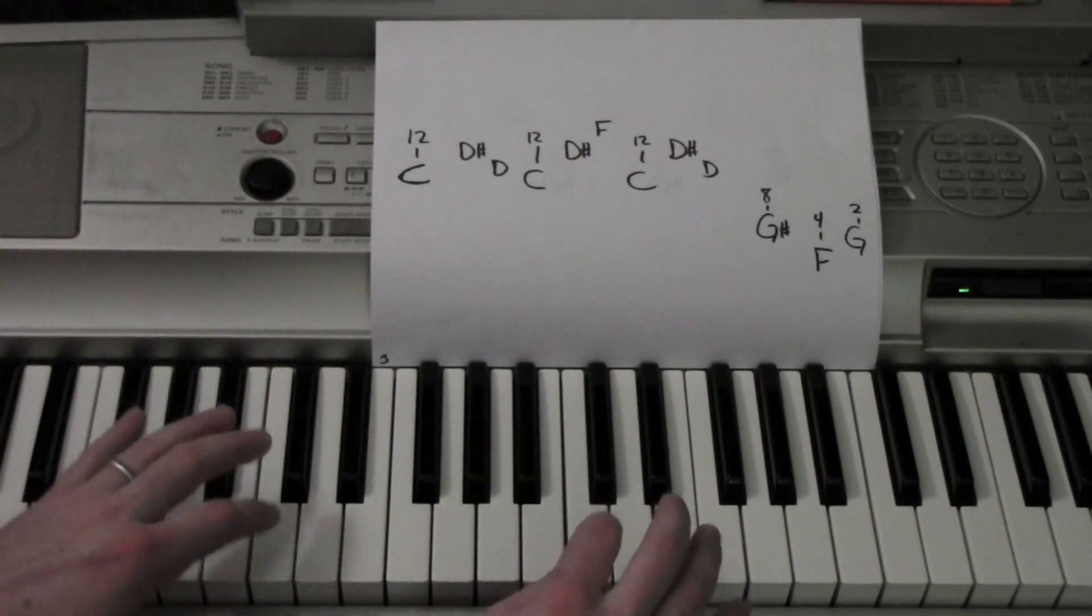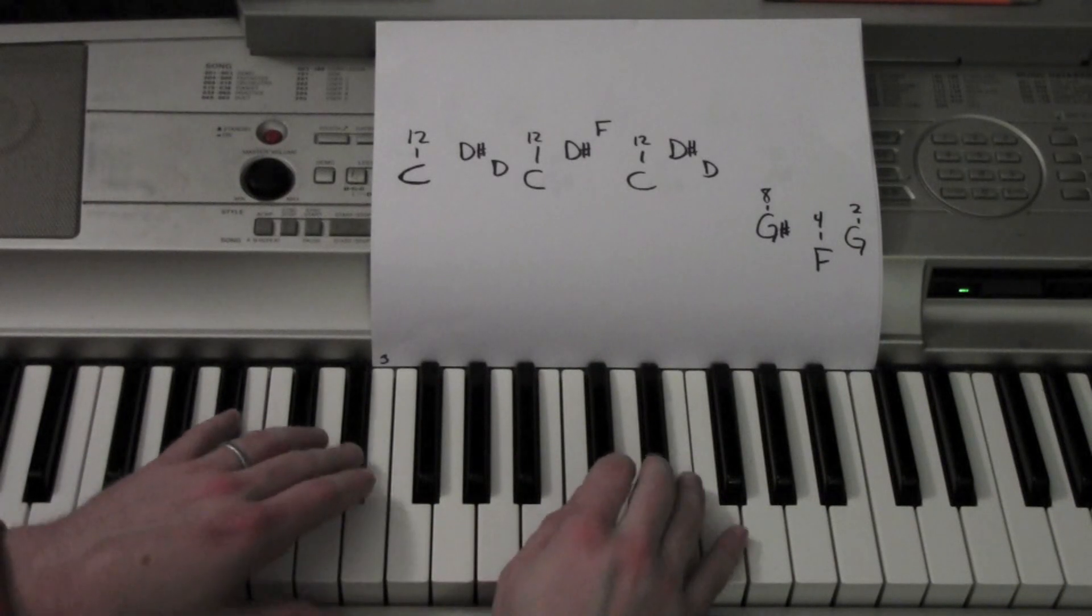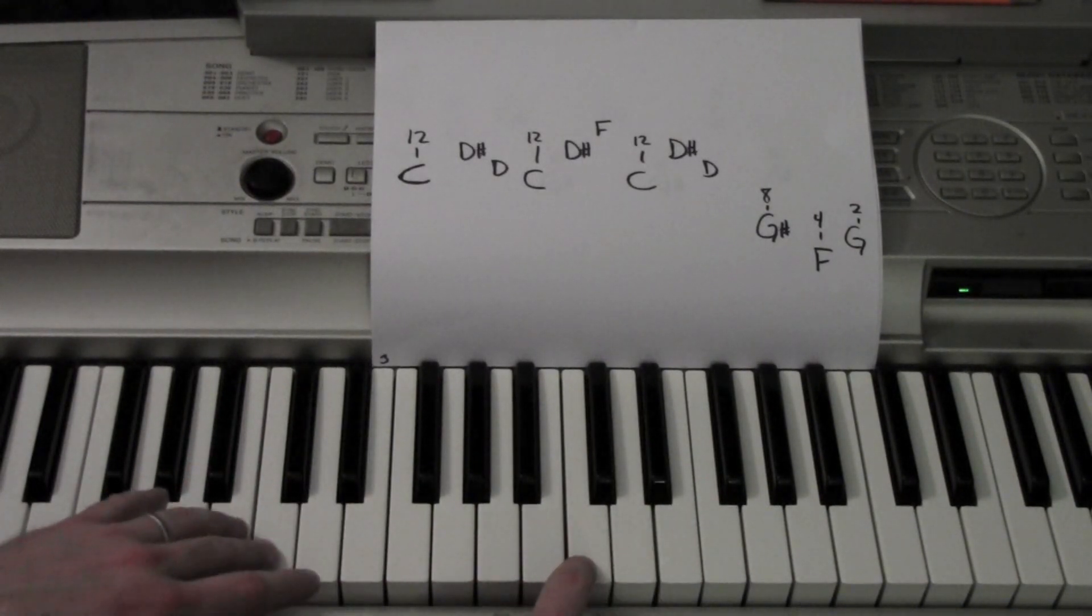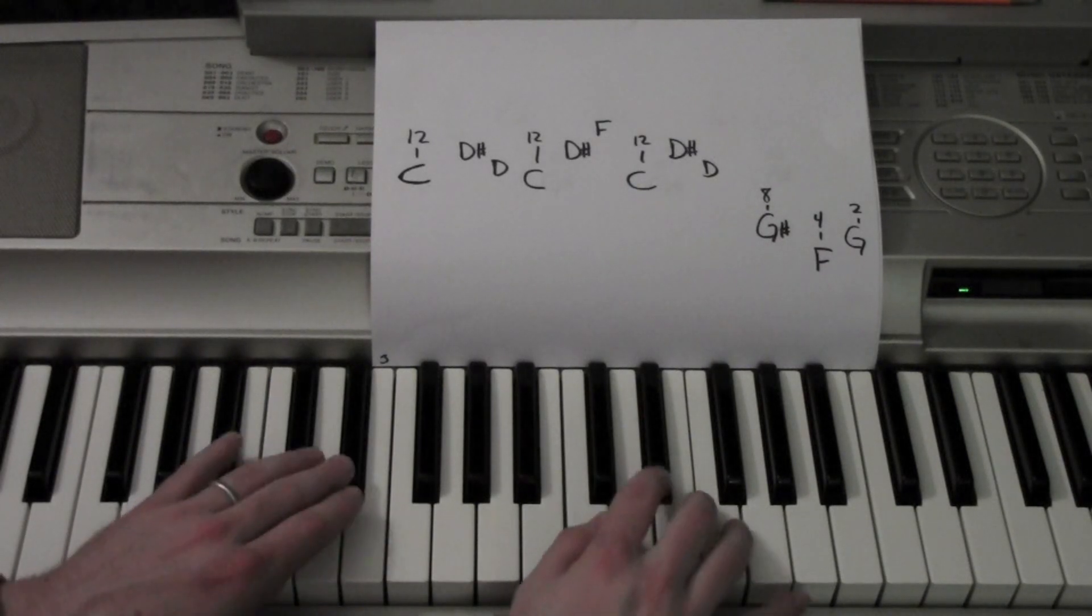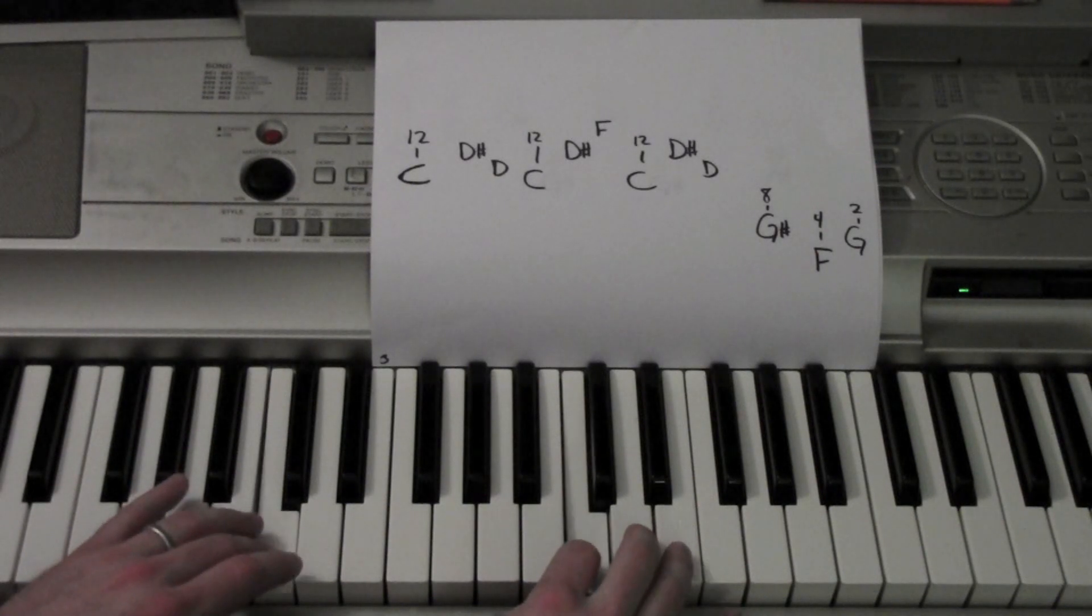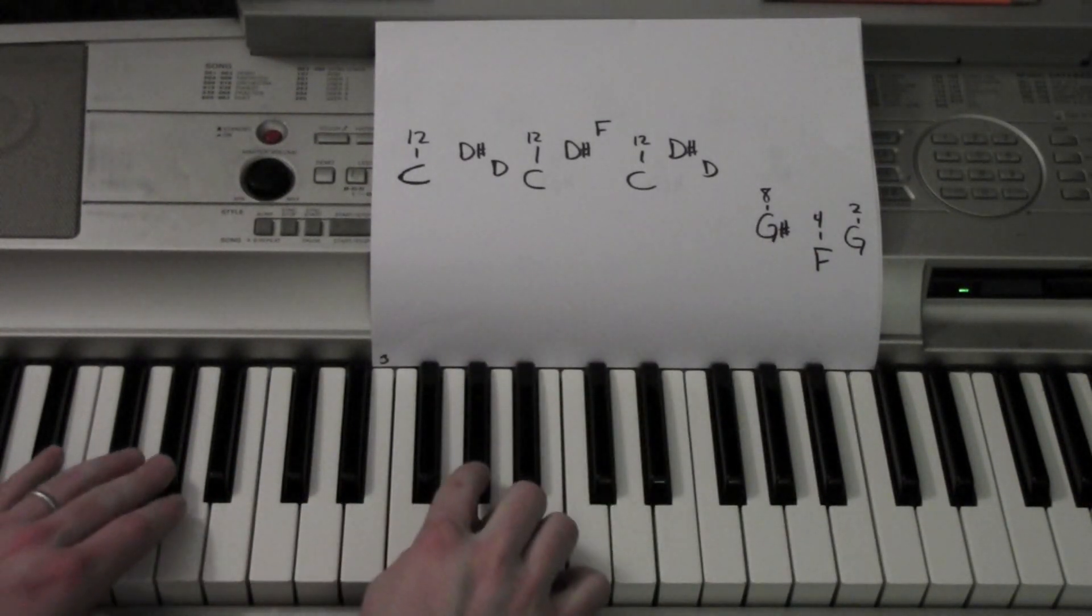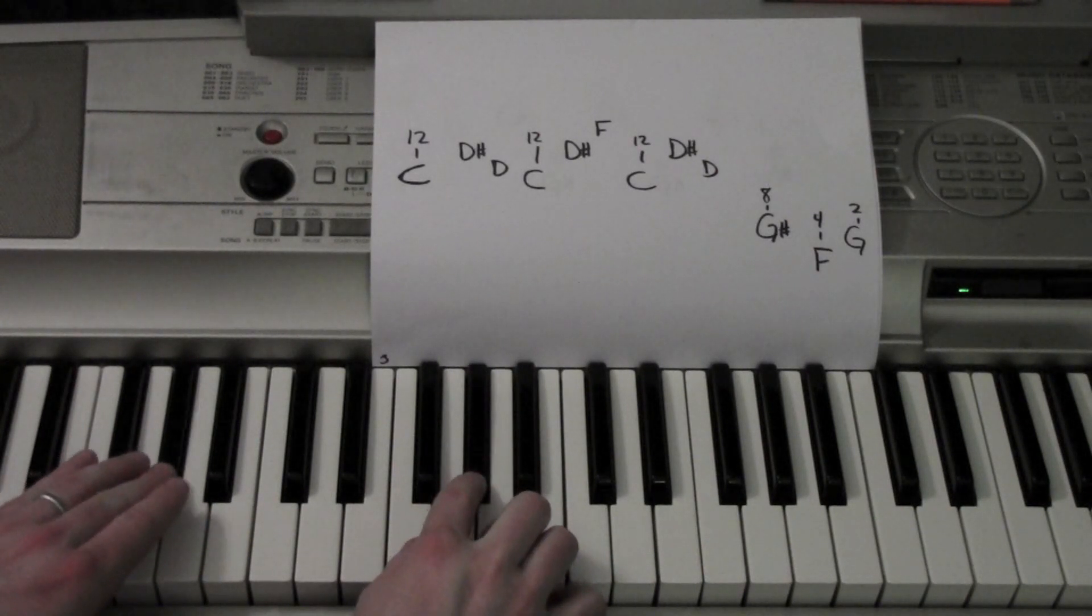So I'm starting from a C 12 times. D-sharp, D, C-12 again. D-sharp, F, C-12 again. D-sharp, D, to G-sharp eight times. F-four times. G-two, G, G.